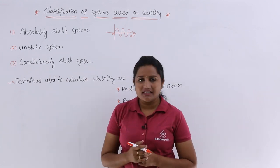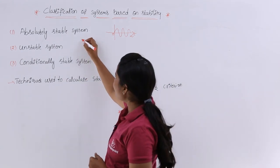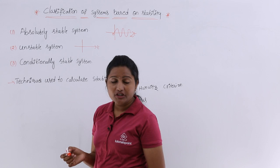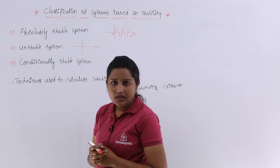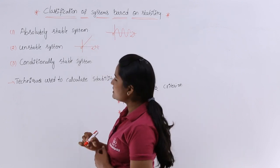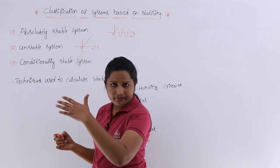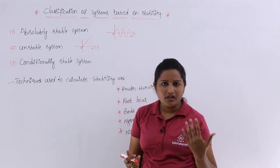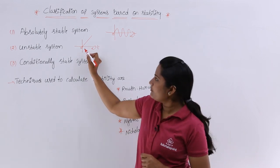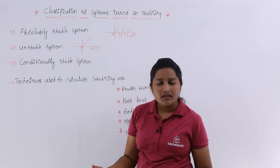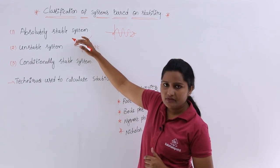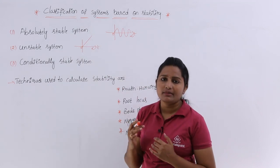Coming to the example for an unstable system: if my system parameter is T and my system function is going to vary with T, from 0 to infinity my response of the system is like a ramp. This is not finite. As already mentioned, a ramp is not a bounded signal. So for variation of its parameters it is not going to get a finite output, and we can say this type of system with this type of response is an unstable system.